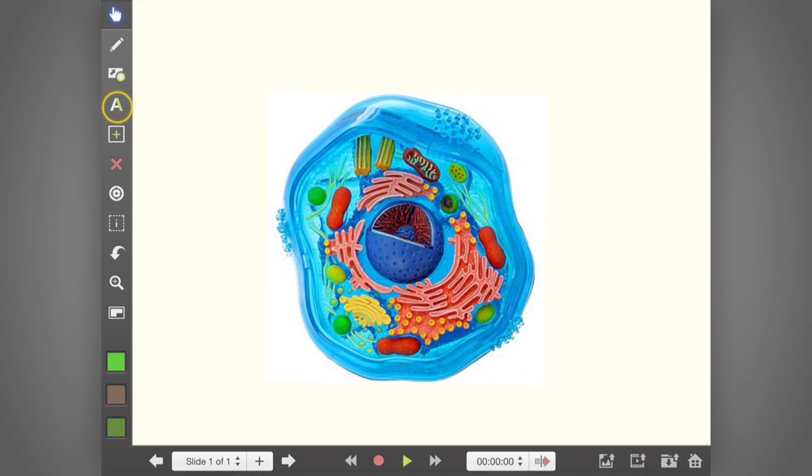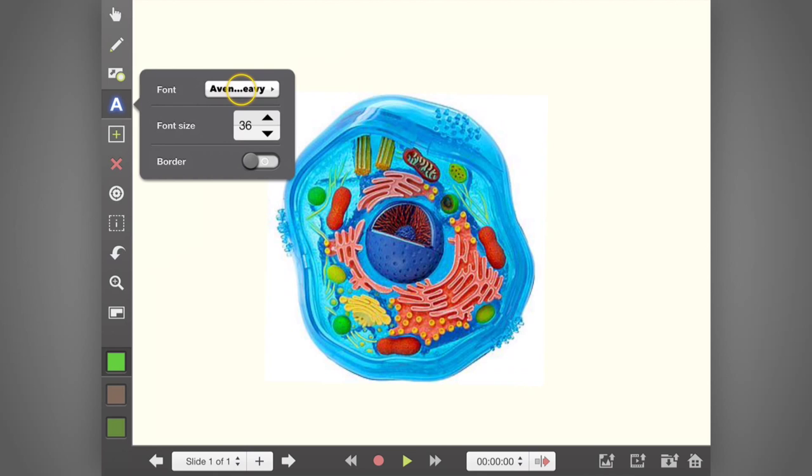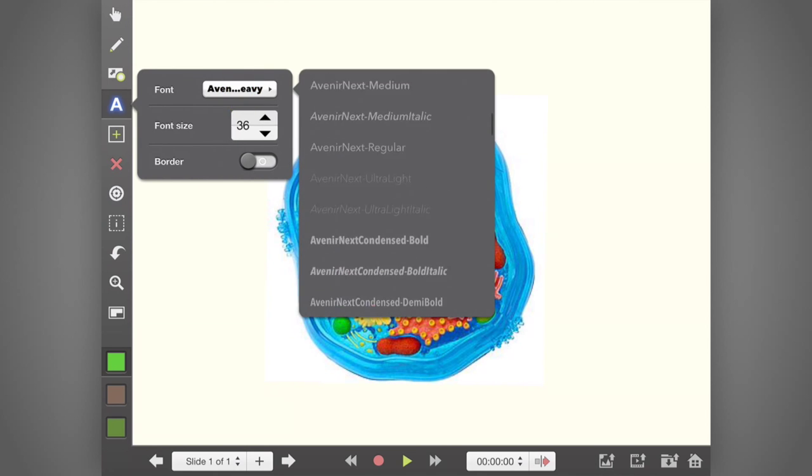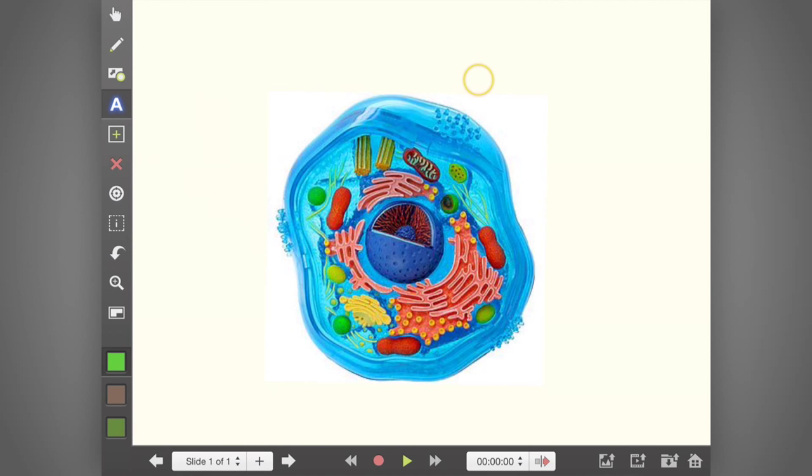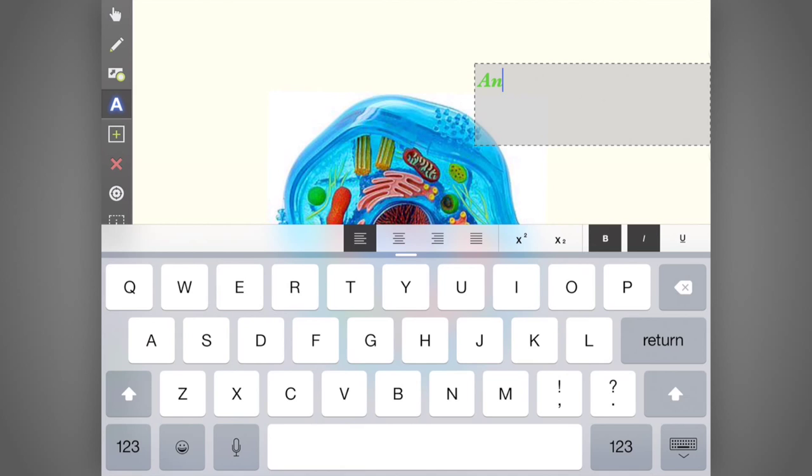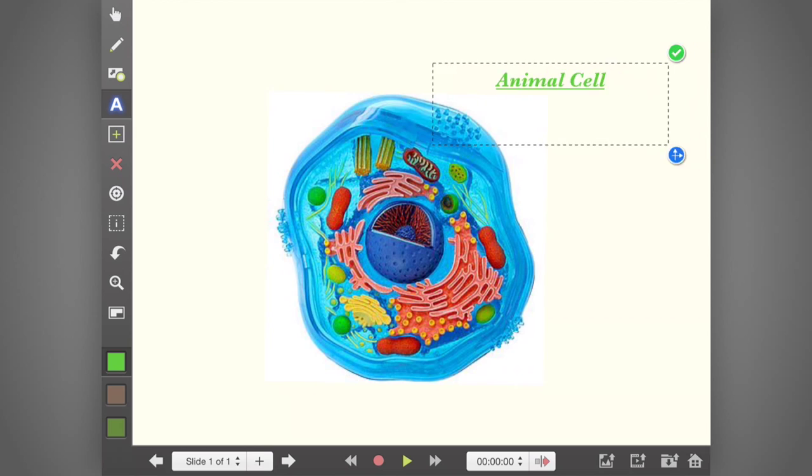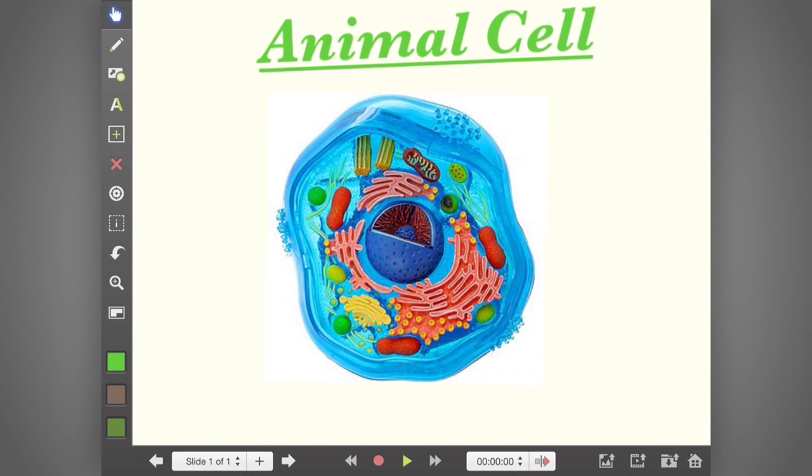We can add text by clicking on the big A. And again it gives us some options of our font or the size we want for our text. Then if we tap on the page somewhere, a box opens up. You can edit your text while it's in the box. You can also resize it afterwards. So if we press this little green tick, we can then resize our text and make it as big or as small as we like.